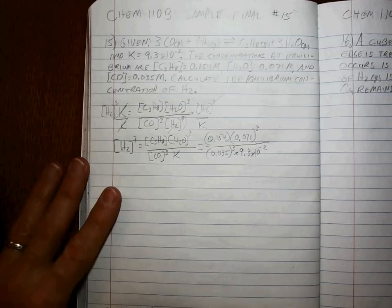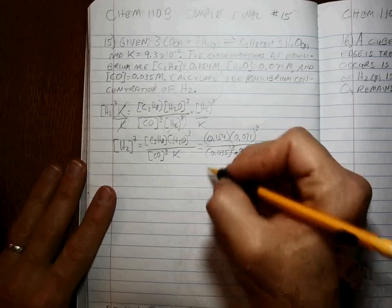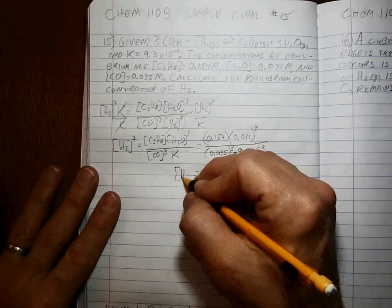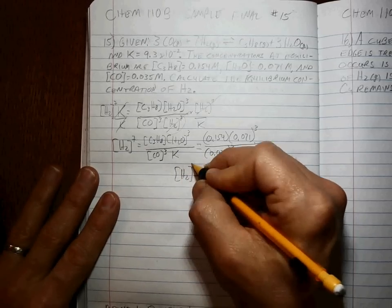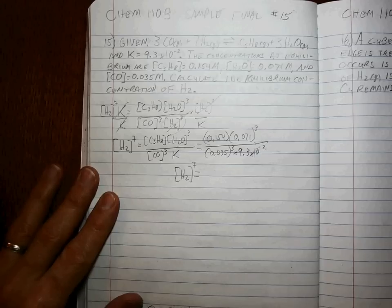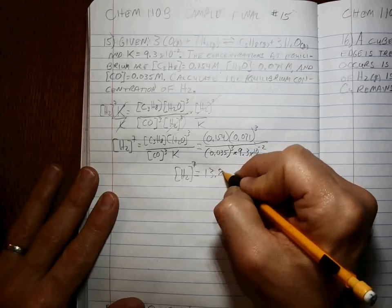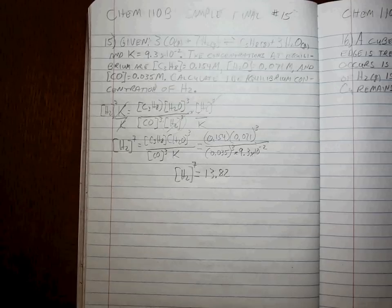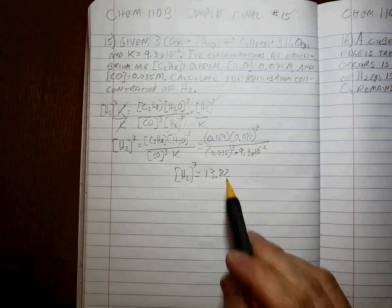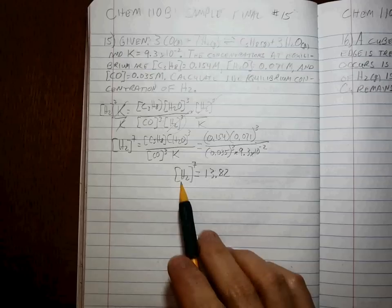Okay, so we're multiplying this times this divided by that times that and what do we get? We get 13.82. You'd better get that, but remember what is that equal to? It's not equal to the H2 concentration.